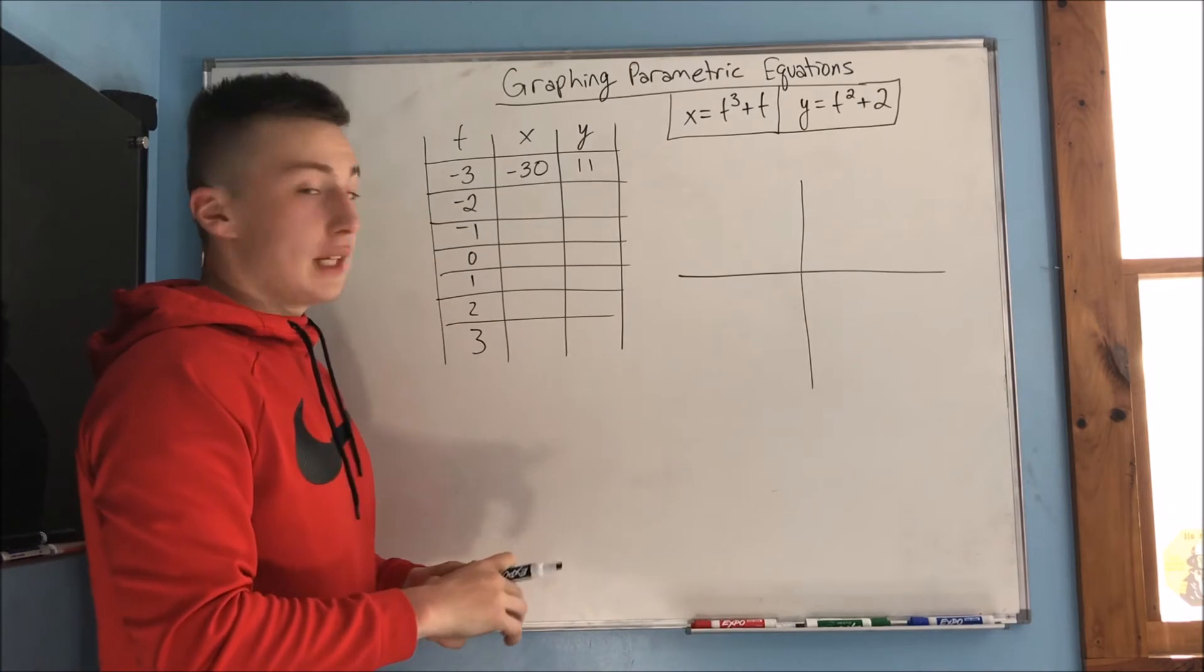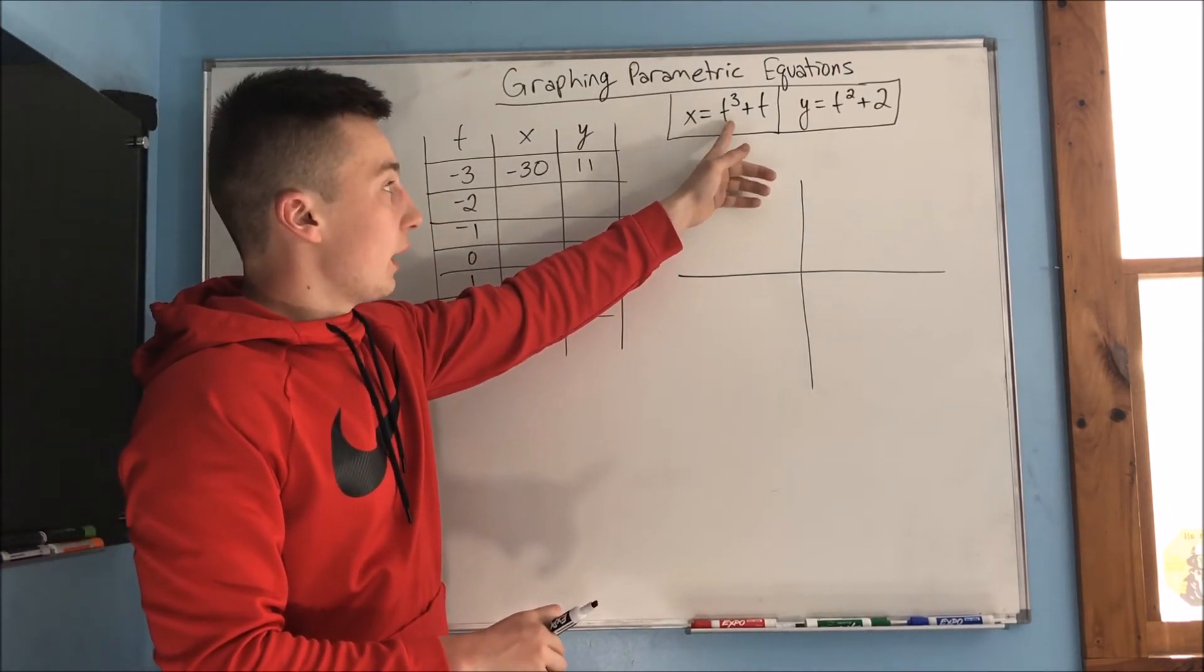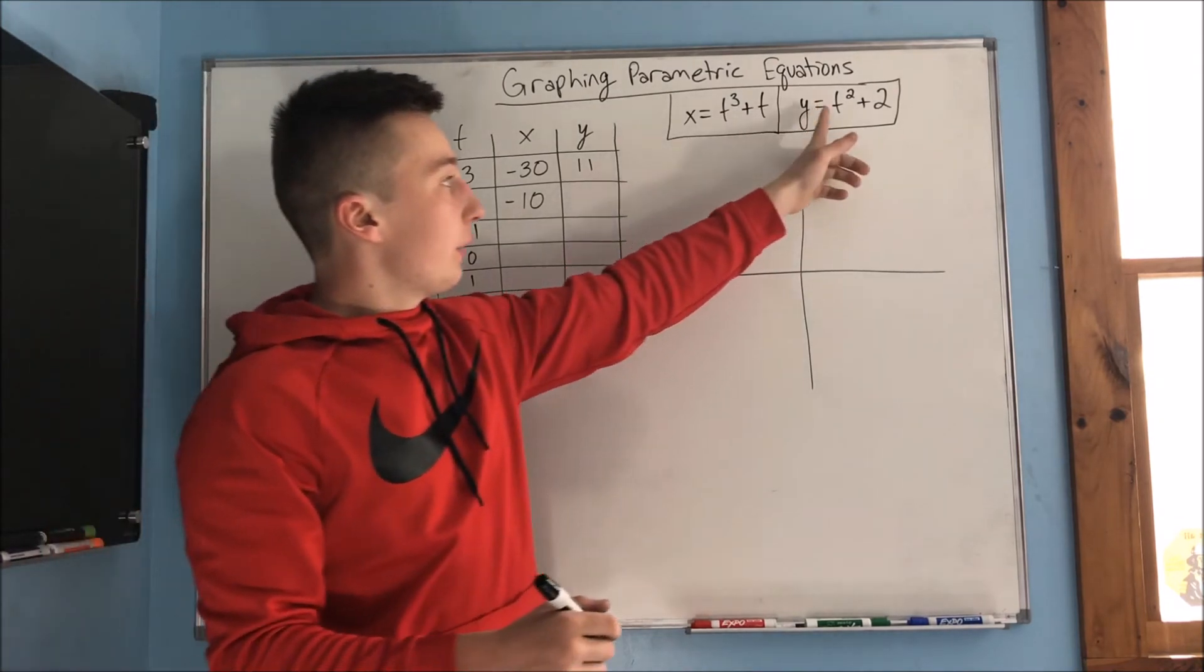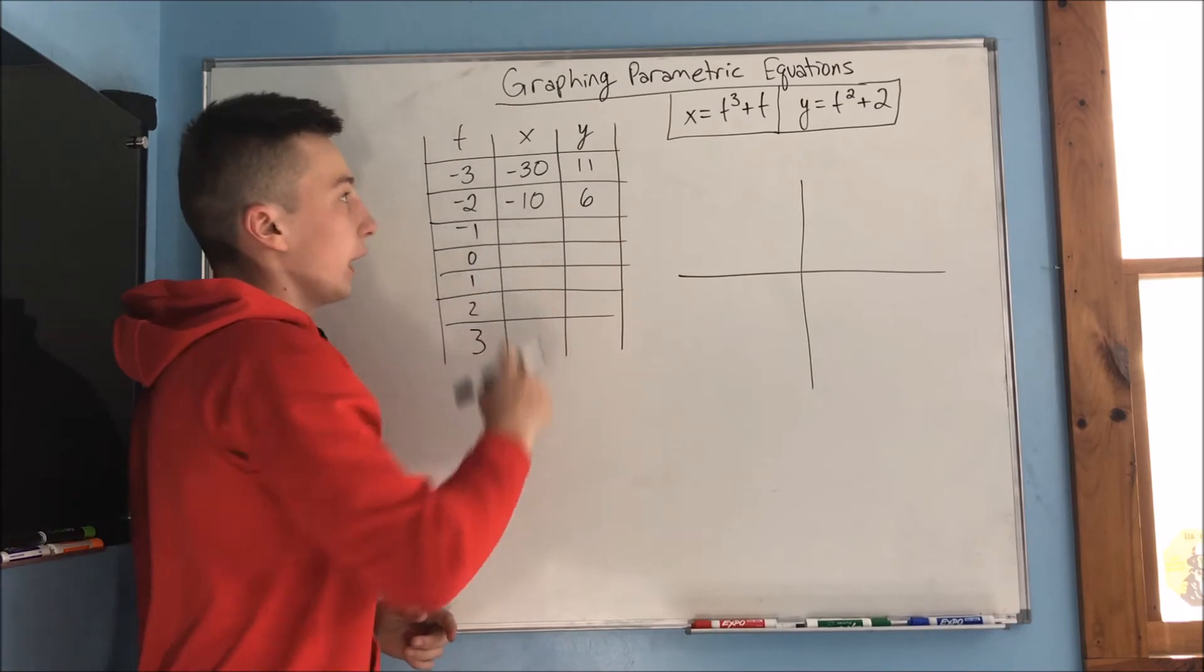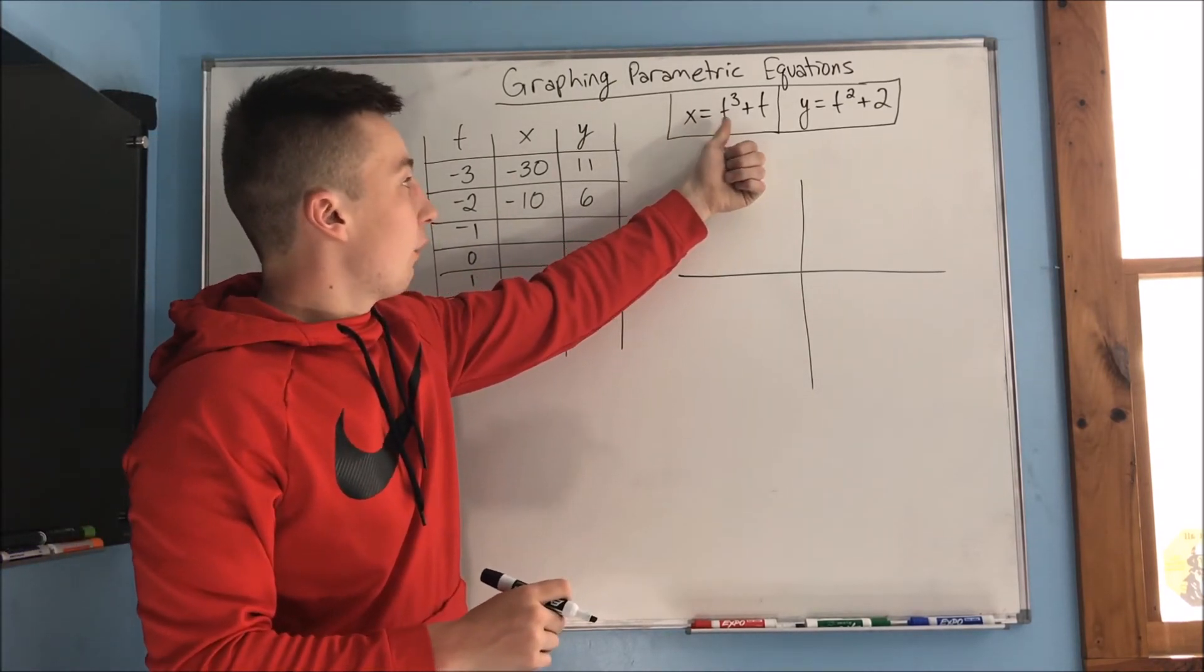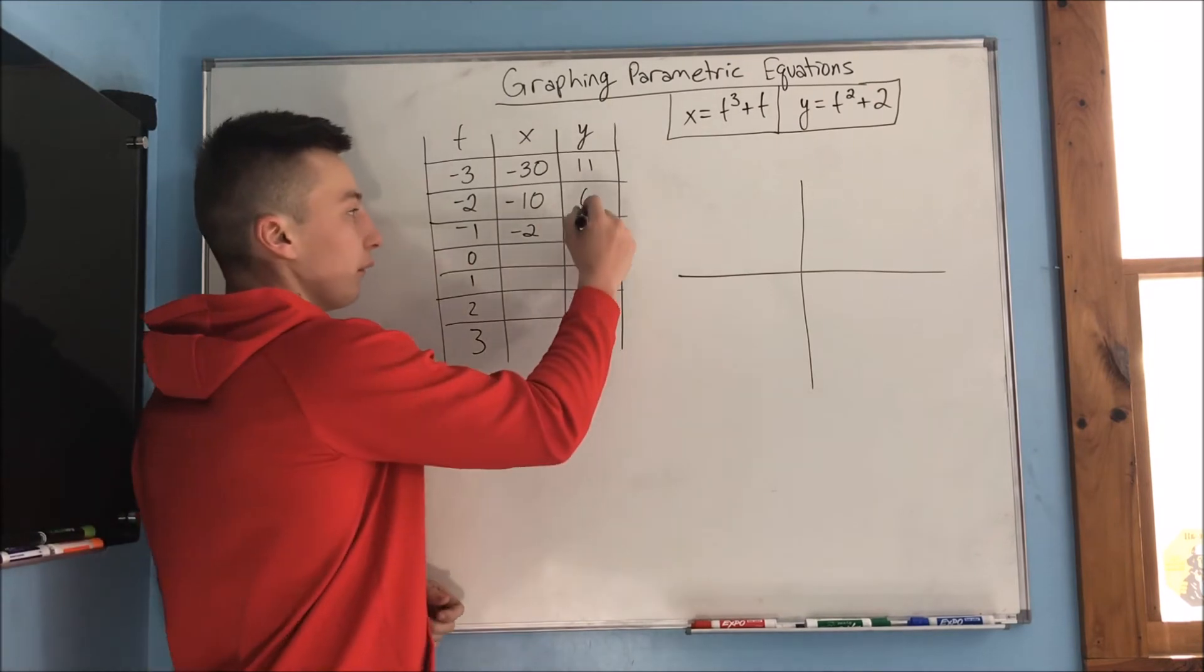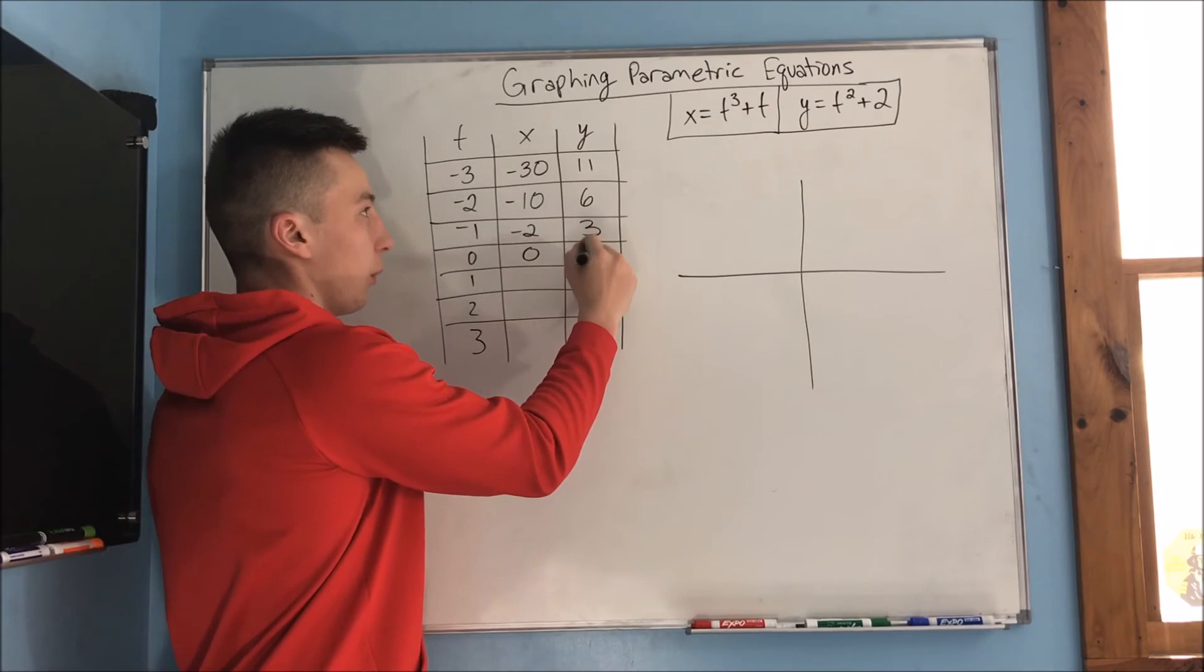So for t equals negative 2, if we plug in a negative 2 here, that means that we get a negative 8. And that's going to be minus 2, so we're going to get negative 10. For y, if we plug in negative 2 for t, we get 6. For negative 1, we get negative 1 minus 1, so it's a negative 2. And for y, we're going to get 3. For 0, we would just end up with 0 for x and 2 for y.